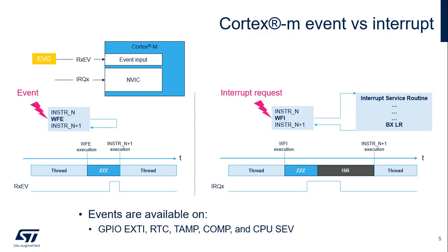With WFE, the first instruction executed after a wake-up event is the next sequential one — INSTR N+1 in the sequence. By implementing WFI, the processor jumps to the interrupt service routine when an enabled interrupt request is received. Note that an interrupt request is a WFI exit condition, but an event received on RxEV is not a WFI exit condition. For the STM32-WL5 series, event generation is only available from the listed peripherals.